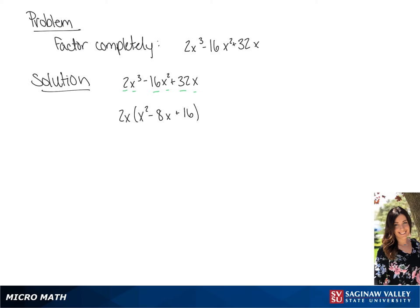We can further factor this into two binomials. Since x squared and 16 are both perfect squares, we have x minus 4 in each binomial. Fully factored, this gives us 2x times x minus 4 squared.